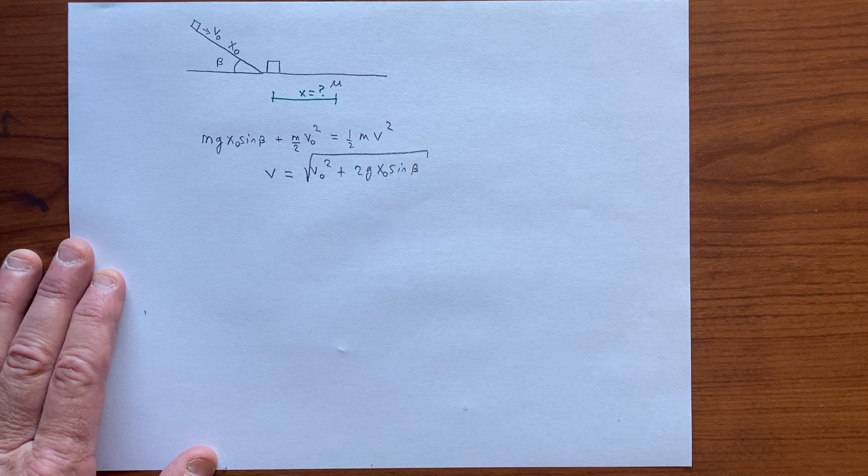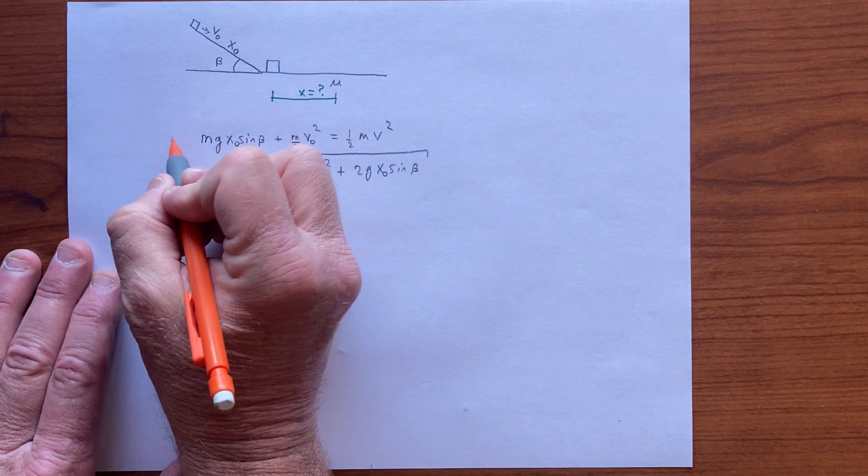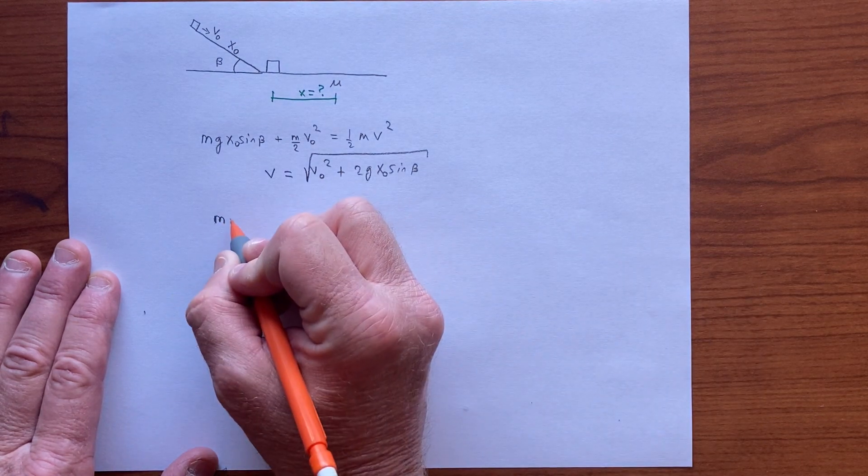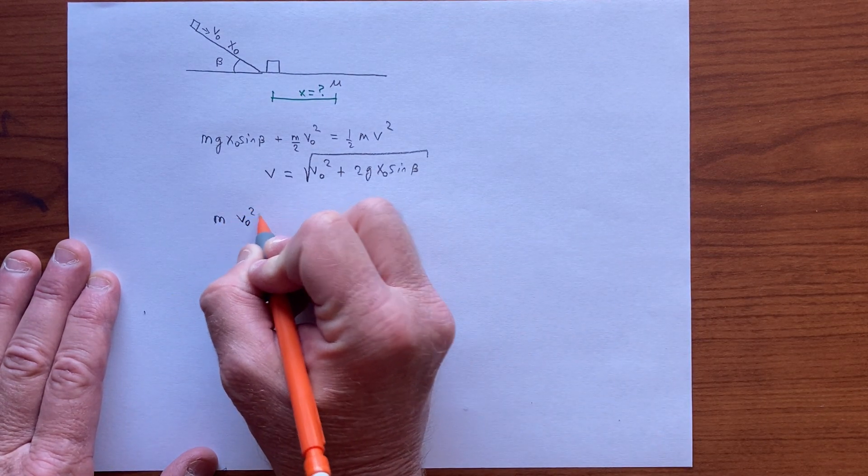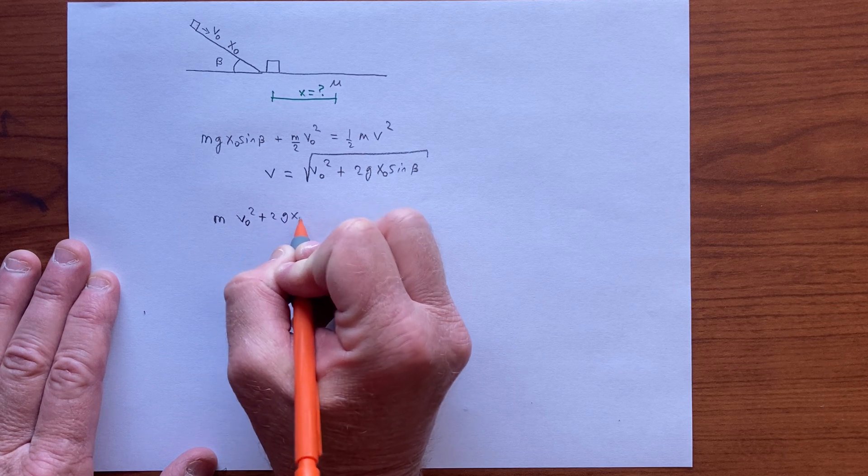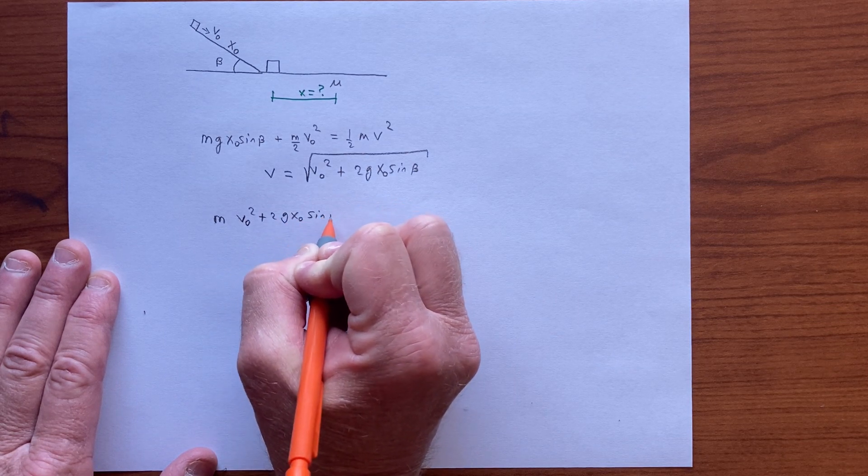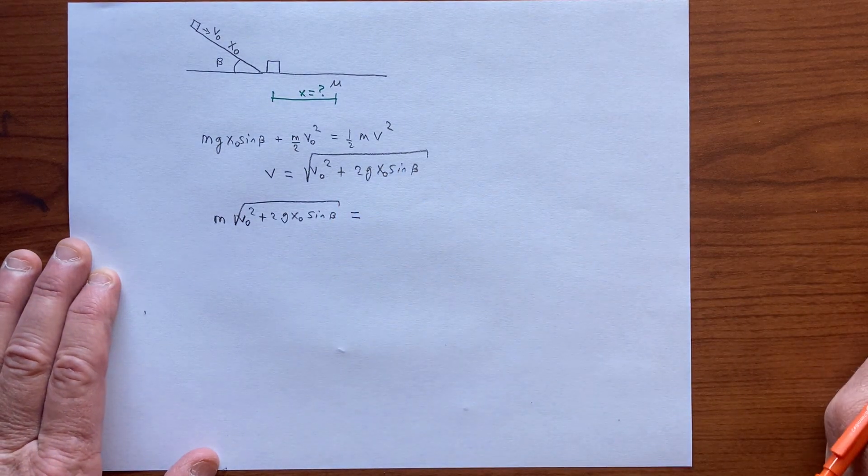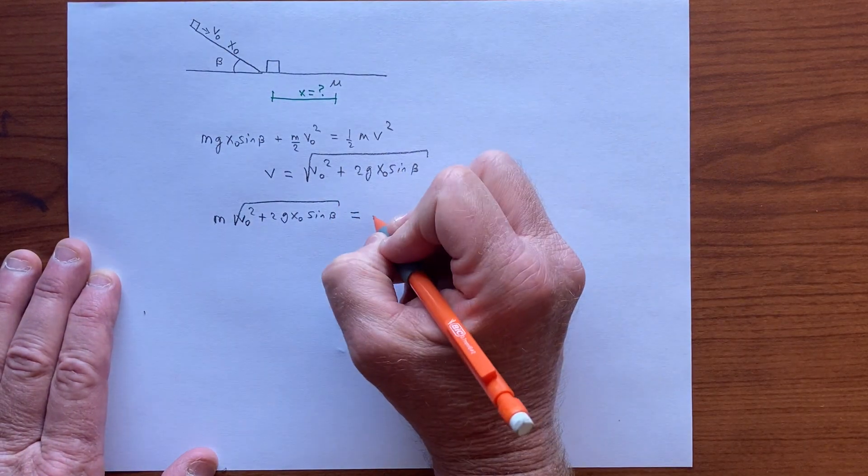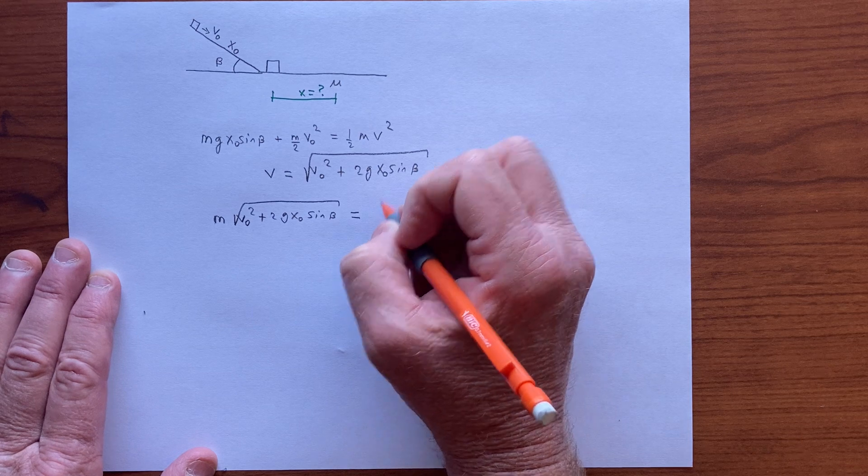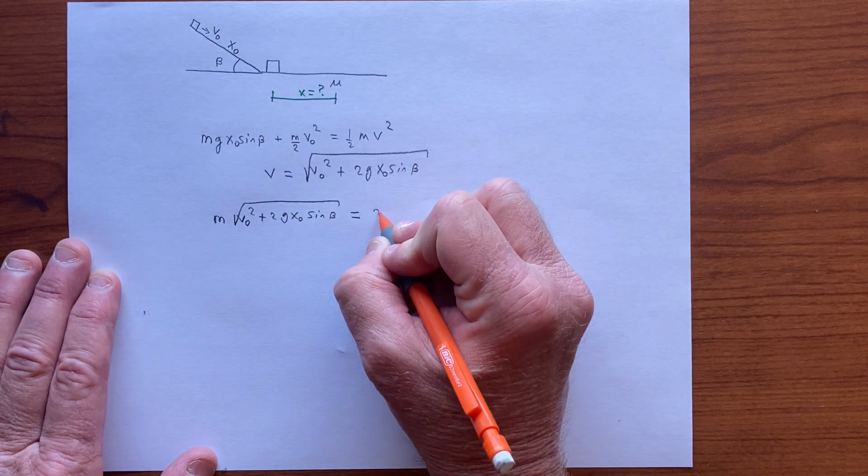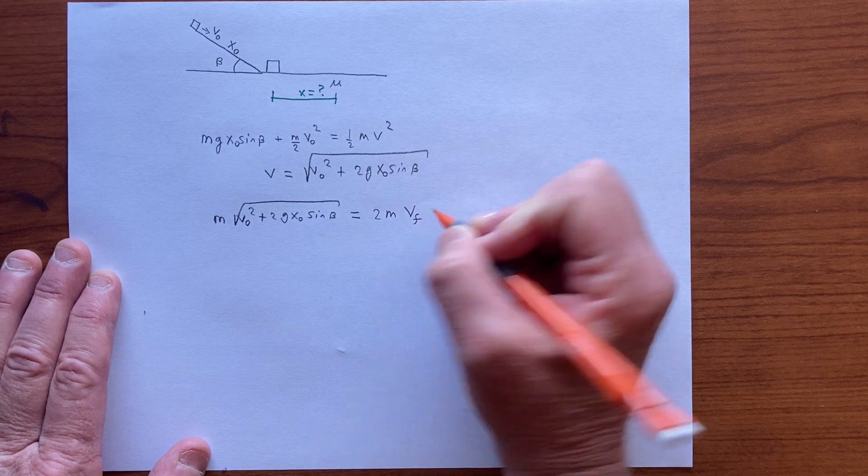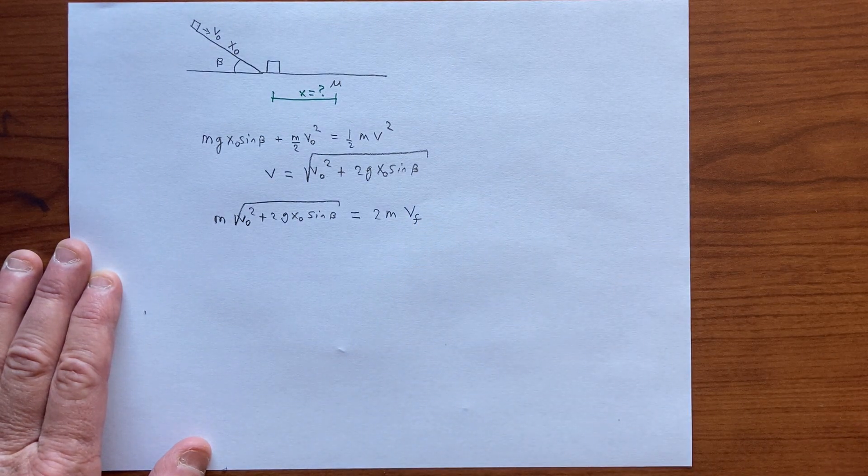And the reason why we want that speed is because we now apply momentum conservation in the collision. So we have the unknown mass times this speed as the momentum before the collision, and then after the collision they have the same mass, we don't know what that is, but it's just 2 times that unknown times some final speed, the post-collision speed.